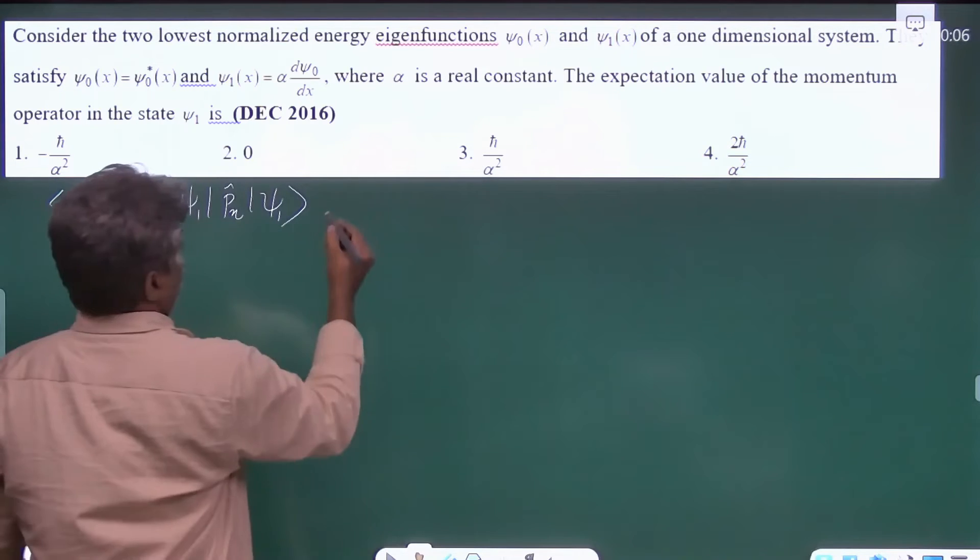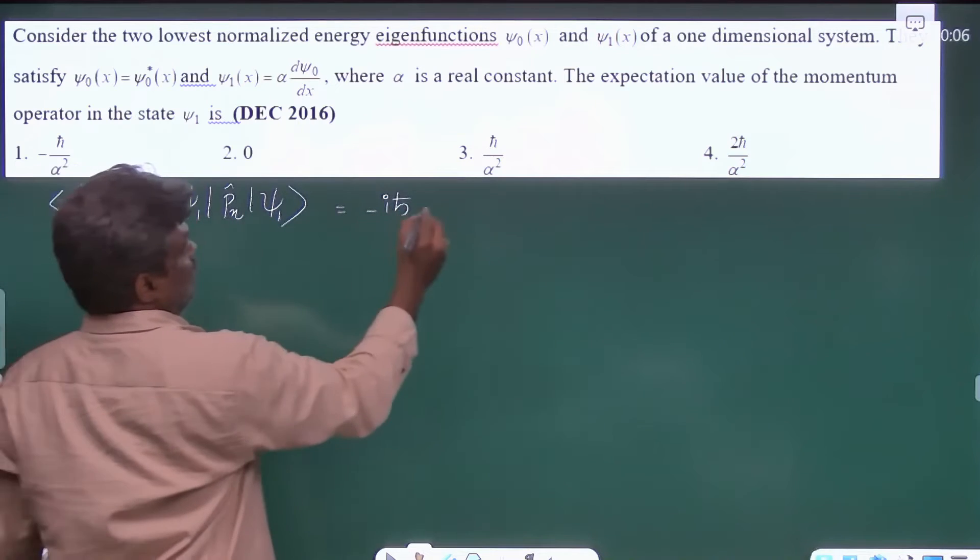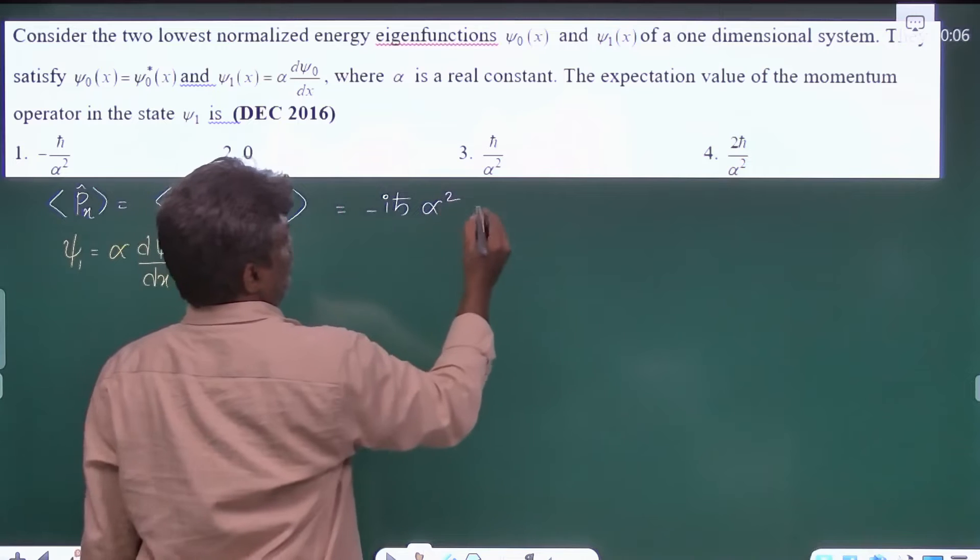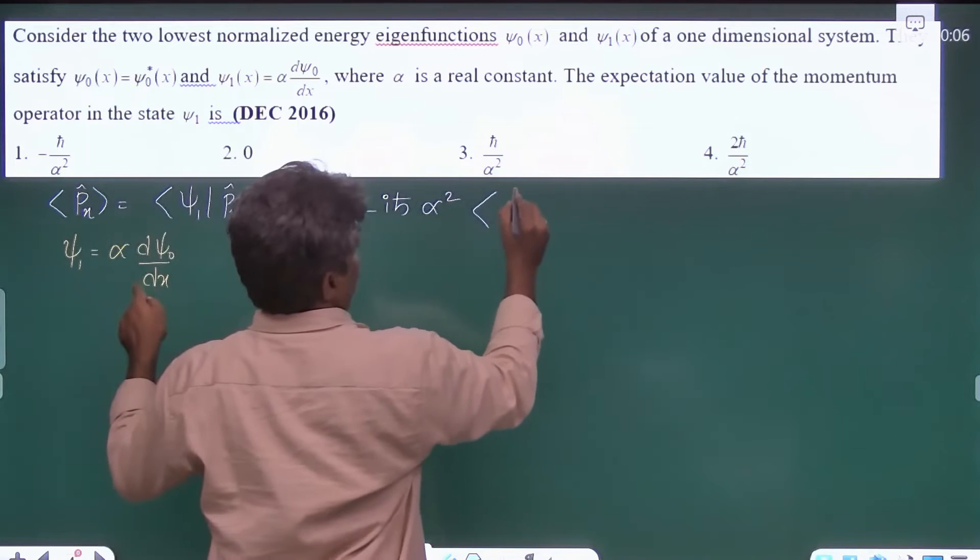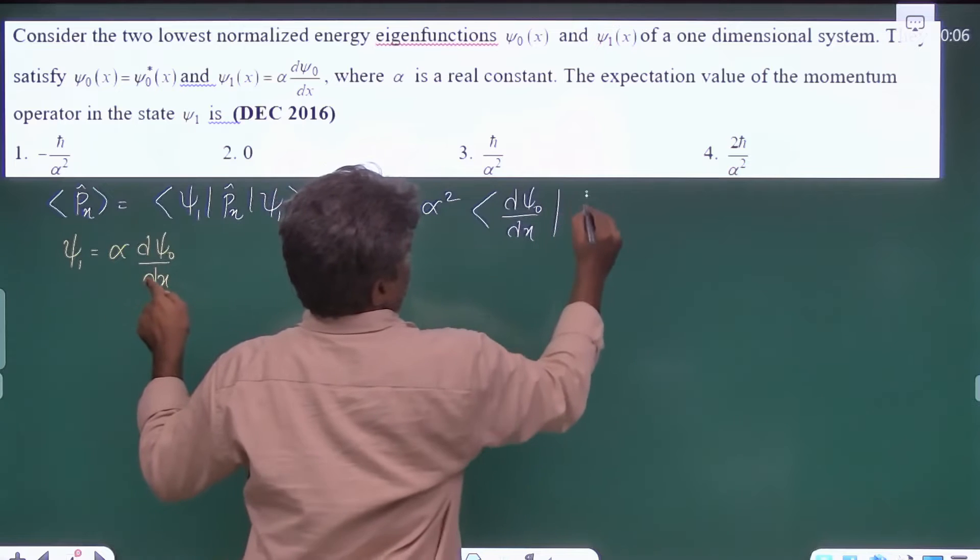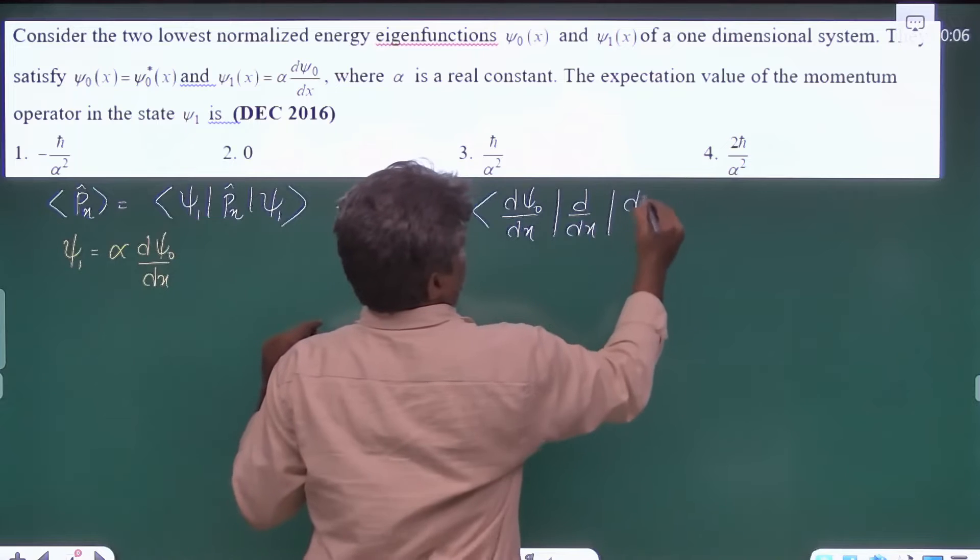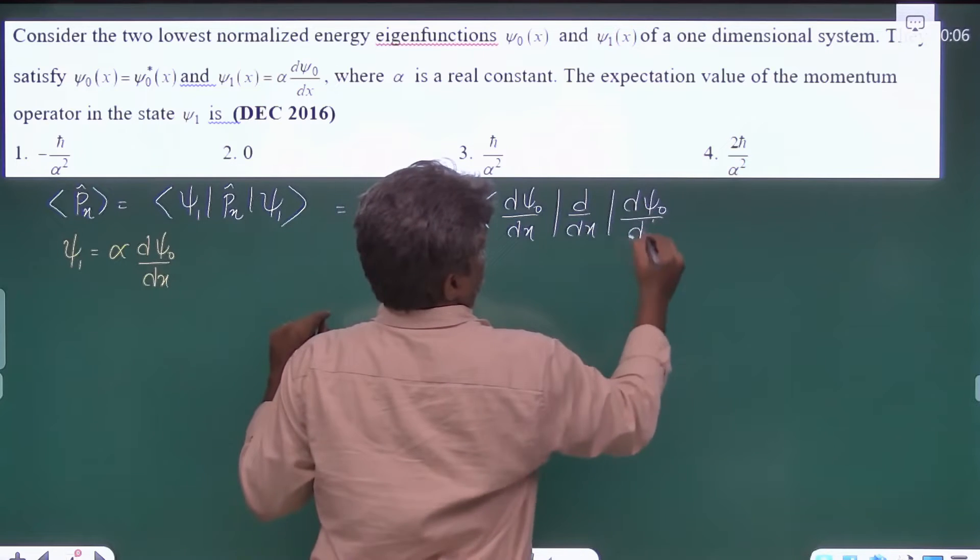we will get minus ih cross out, and here is one alpha and here is one more alpha—alpha square—and this is d psi0 by dx and d by dx. This is corresponding to the operator, again d psi0 by dx.